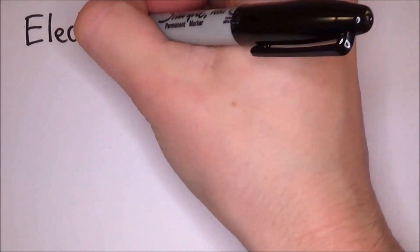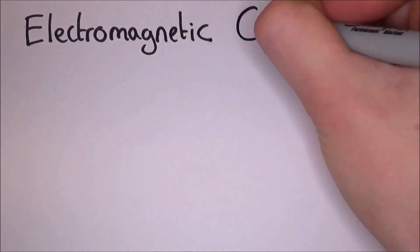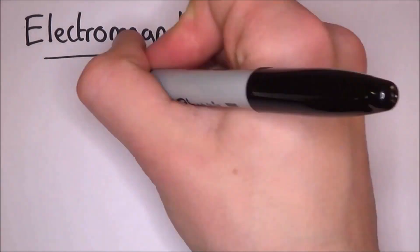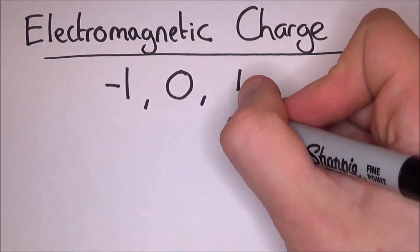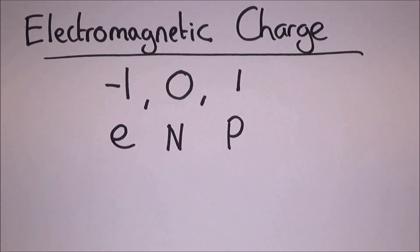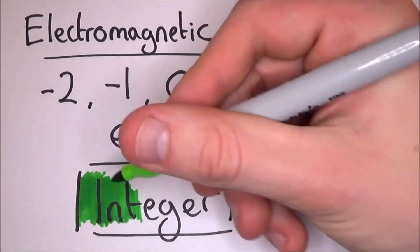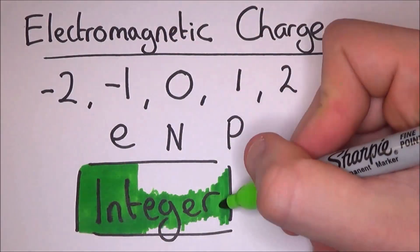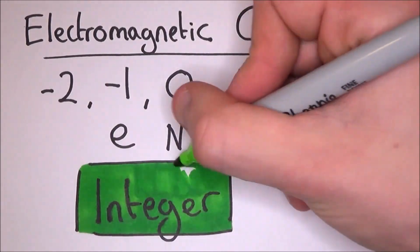One of the things we need to keep in mind is that all particles have an electromagnetic charge, whether that be one, zero, negative one, the charge of protons, neutrons and electrons respectively. It is also possible to get a charge of two or minus two, but what you need to take from this is that the charge has to be an integer value.